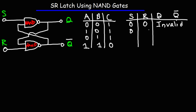When S is 0 and R is 1, Q is going to be 1 and Q bar will be 0. When S is 1 and R is 0, Q is going to go to 0 and Q bar is going to be 1. And when they're both 1, there's going to be no change — that's when the circuit shows memory. It's going to retain its previous output, and we'll illustrate that using examples.